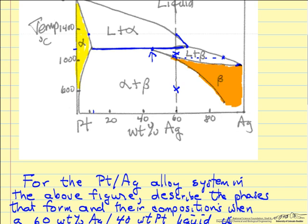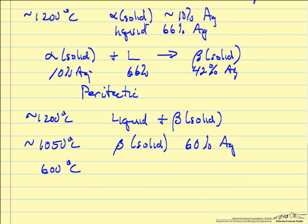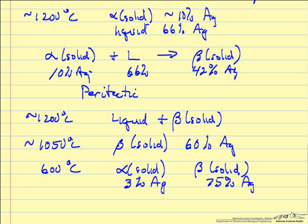Now as we continue to cool into this region, we have two solid phases in equilibrium. We reform alpha phase and the beta phase composition increases. As we continue to move down, the silver content in the alpha phase is decreasing and the silver content in the beta phase is increasing. So when we get down to 600°C, we have two solid phases: the alpha solid at roughly 3% silver and the beta solid at roughly 75% silver.